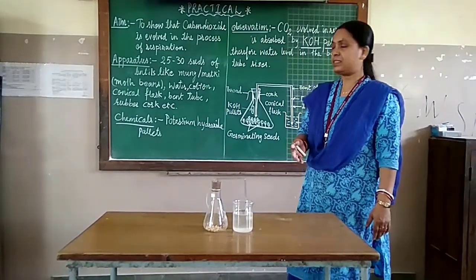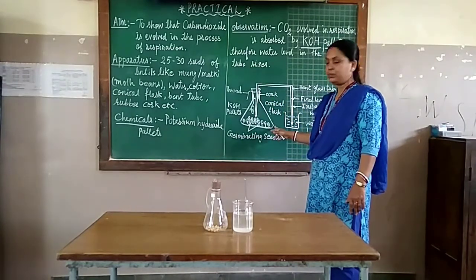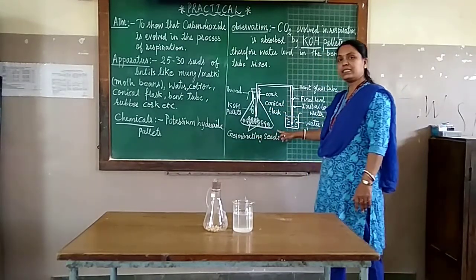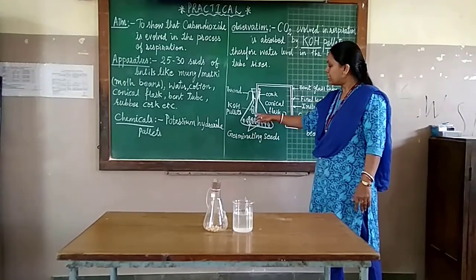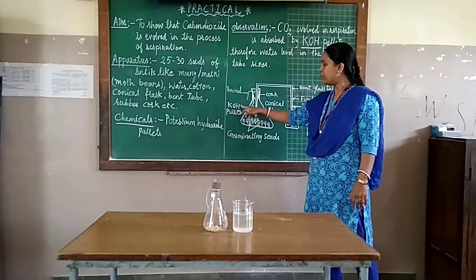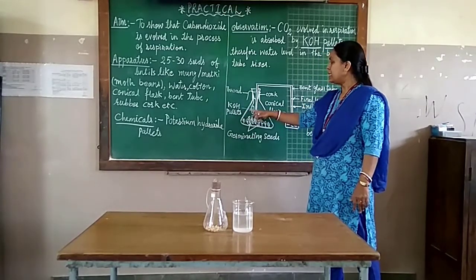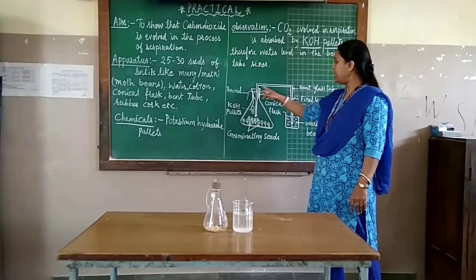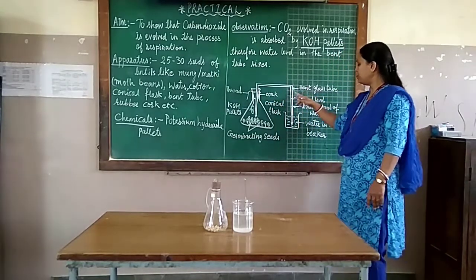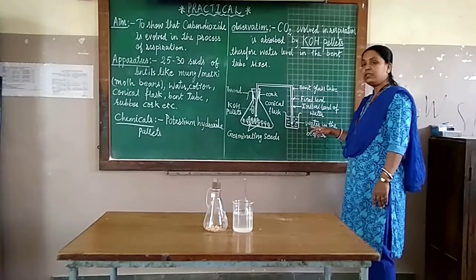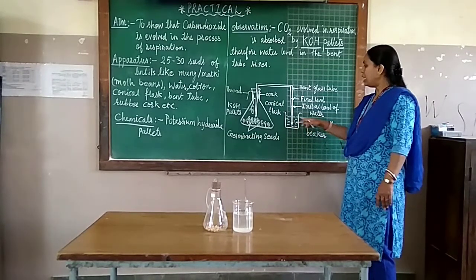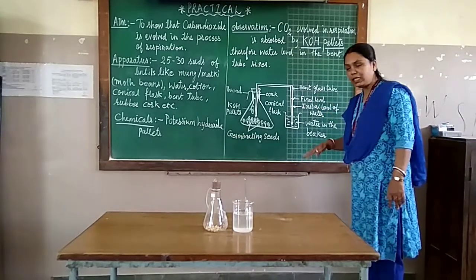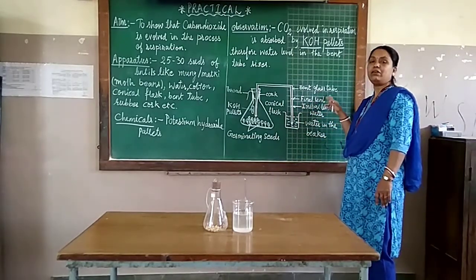For your assistance, I have drawn a diagram. In this diagram, you will see the conical flask with germinating seeds. There is a small tube in which we have placed potassium hydroxide pellets, tied with the help of thread. Then there is a cork through which there is a bent tube. The other end of this bent tube is placed inside the beaker containing water. In this tube, you can see the initial level of water is at a lower level than the final level of water.